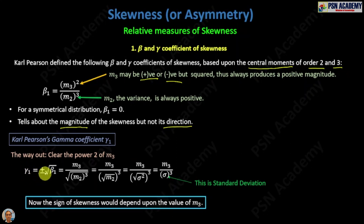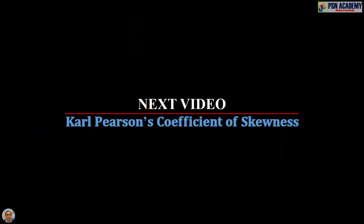The sign of the skewness depends upon the value of m₃. That covers the beta and gamma coefficient of skewness. In the next video we will discuss the second relative measure of skewness, which is Karl Pearson's coefficient of skewness.